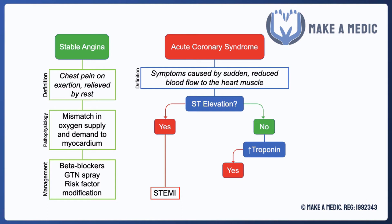The presence of elevated troponins with no ST elevation is a non-ST elevation myocardial infarction. On the other hand, if troponins are not raised, it's considered unstable angina pectoris, which is a condition in which you get chest pain at rest due to ischaemia of the myocardium. However, the cells haven't started dying yet, and hence there is no infarction at present.